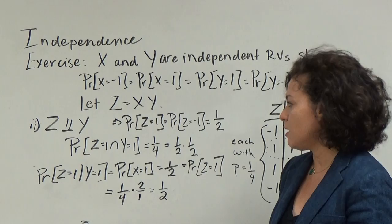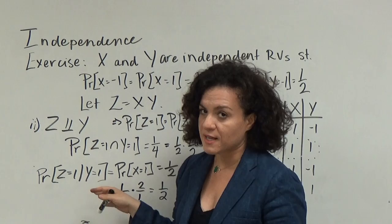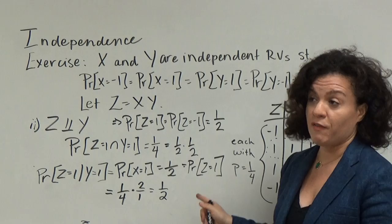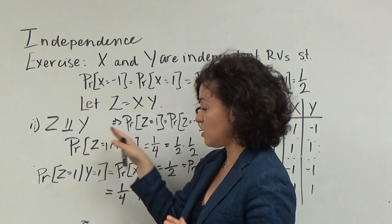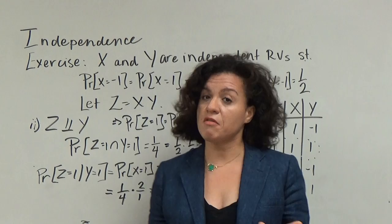To make more progress on this exercise, you have to show this for all possible values that z and y can take. The argument for showing that z is independent of x is analogous to the argument for showing that z is independent of y.